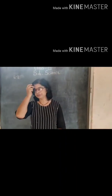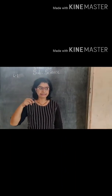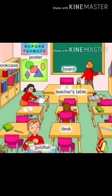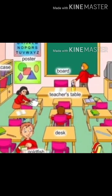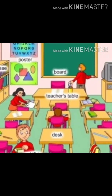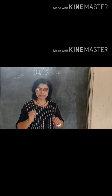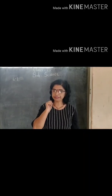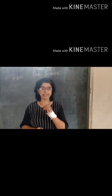Now see in our class, so many things you observe — a fan, board, charts, desks, benches, a table, a ball, a chair, and you all. Similarly, in the surroundings also, you observe so many things like plants, birds, insects, animals.